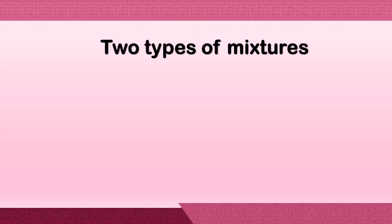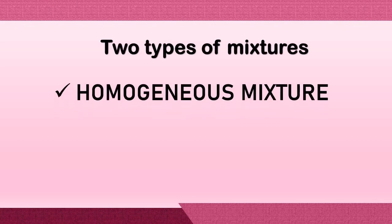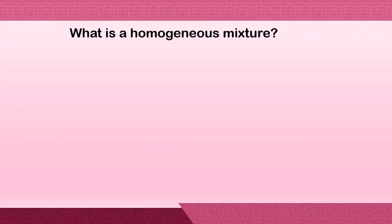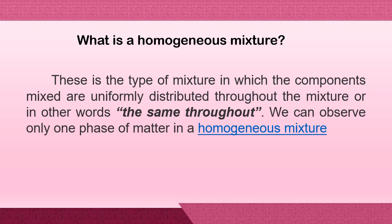There are two types of mixtures: we have the homogeneous mixture and the heterogeneous mixture. Let us first talk about what a homogeneous mixture is. A homogeneous mixture is the type of mixture in which the components mixed are uniformly distributed throughout the mixture, or in other words the same throughout. We can observe only one phase of matter in a homogeneous mixture — you can easily tell that it is a solid, a liquid, or a gas.